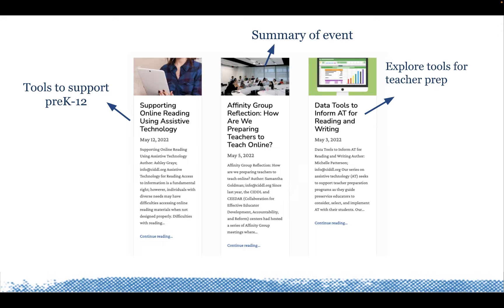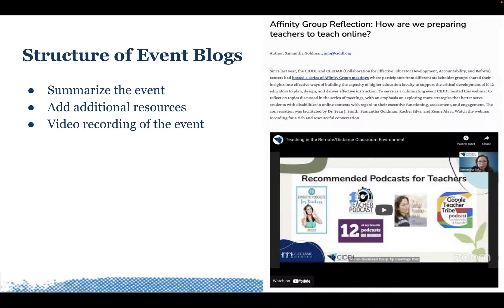Each blog provides a title, an abstract, and then, depending on the topic, a summary of information, tips and tools, and resources. In some instances it includes a video of an actual live event — for example, one blog archived an hour-long live event that brought together stakeholders from across the country on the affinity group topic. Because it was recorded, it's archived within the blog, along with additional resources.